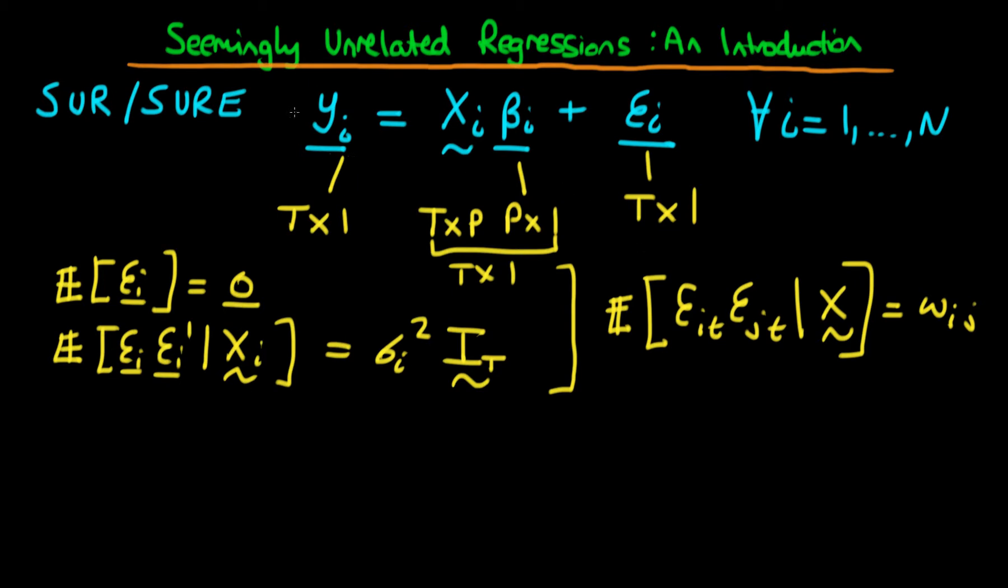Remember that we've got this particular equation up here, holding for each of the different individuals. What we'd quite like is a way of representing this particular equation, but in a more compact form. So what we can do is we can just stack each of the dependent variables on top of one another.